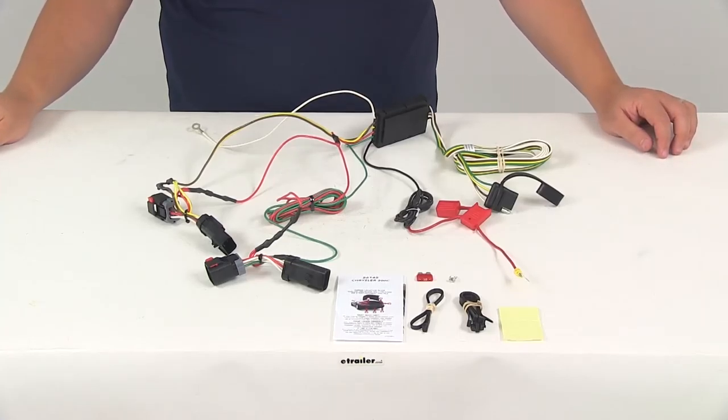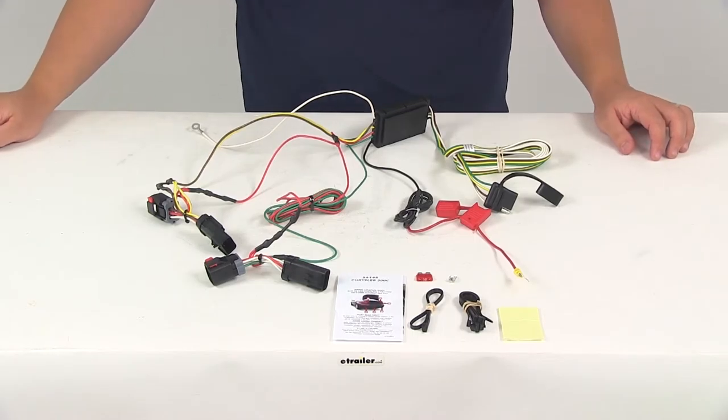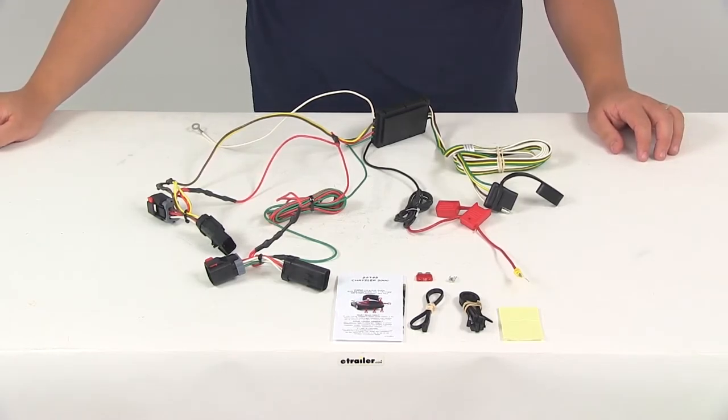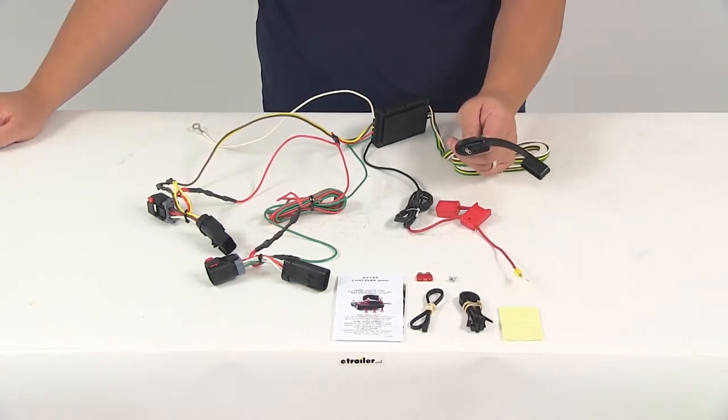Today we're going to be taking a look at part number C56145. This is the Curt T connector vehicle wiring harness with a four-pole flat trailer connector.